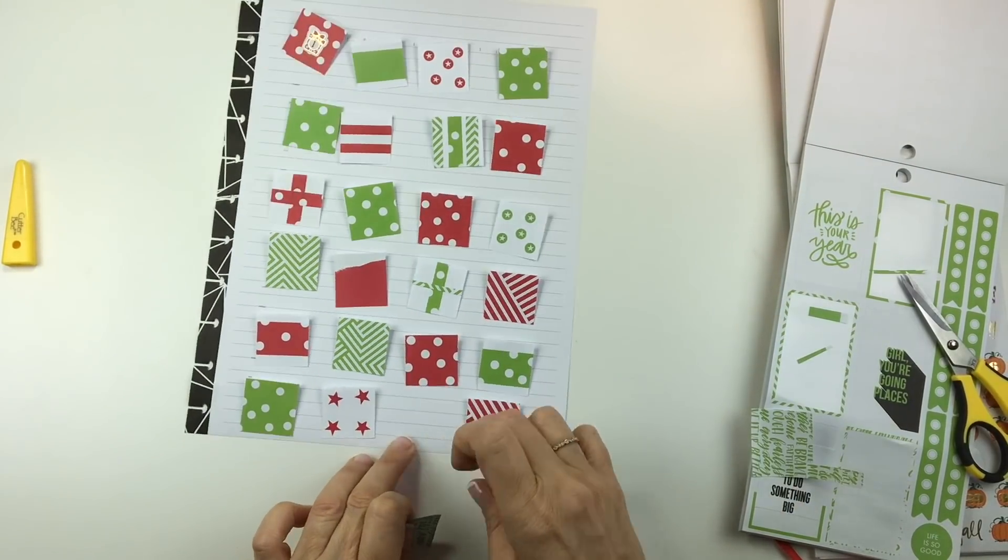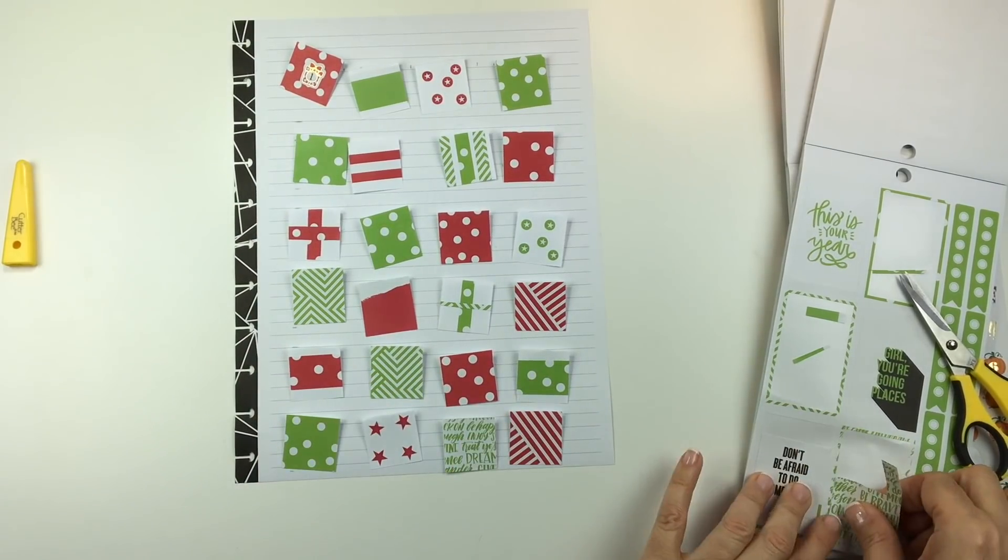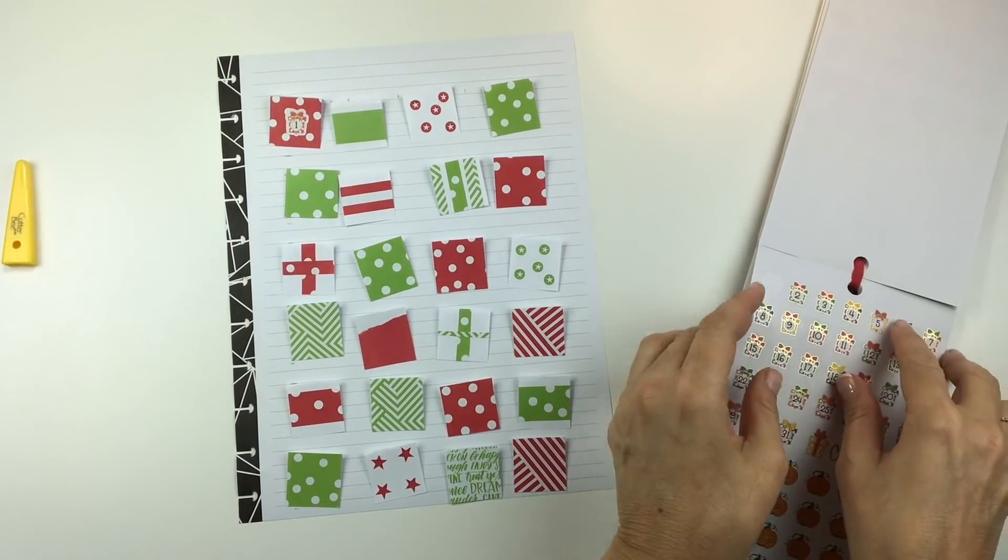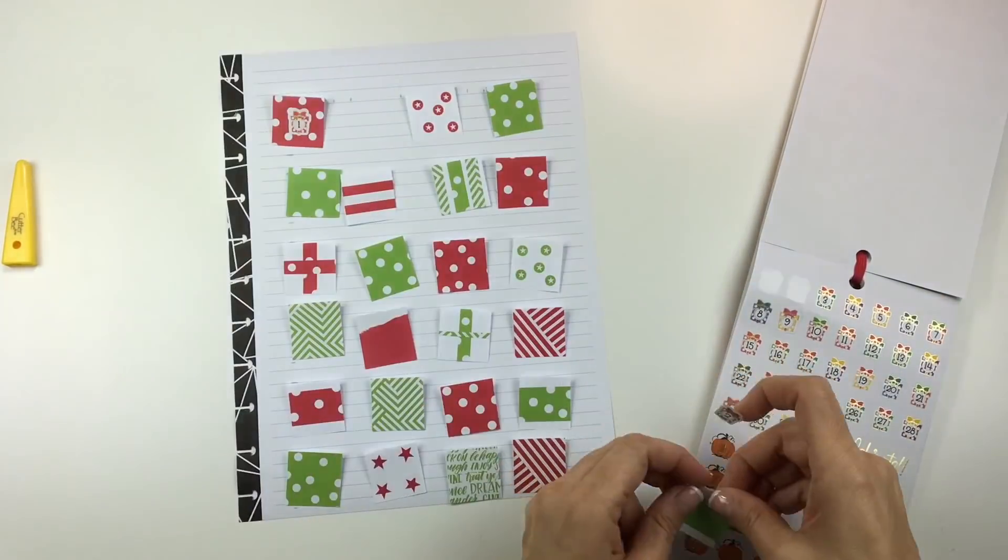I have to number these pieces of paper as well, so I'm just going to grab some of these really cute gift numbers from the dates and holidays sticker book and I'm going to put one on each square.